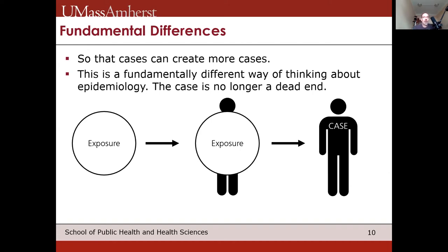This is really the main nuance of infectious disease epidemiology — we're not just talking about people as an endpoint, but as a beginning as well. Over the course of the term we'll see other implications of this, for example when we get to the section on transmission dynamics and modeling, because it very much informs how we approach modeling disease and disease transmission. It changes everything.